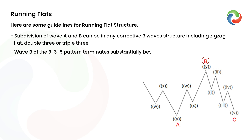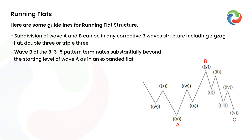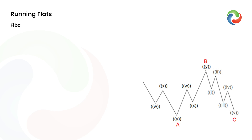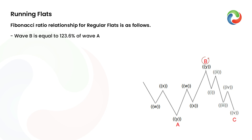Wave B of the 3-3-5 pattern terminates substantially beyond the starting level of wave A, as in an expanded flat. Wave C fails to travel the full distance, falling short of the level where wave A ended. Wave C needs to have momentum divergence. The Fibonacci ratio relationship for running flats is as follows: Wave B is equal to 123.6% of wave A. Wave C is equal to 61.8% to 100% of wave AB.